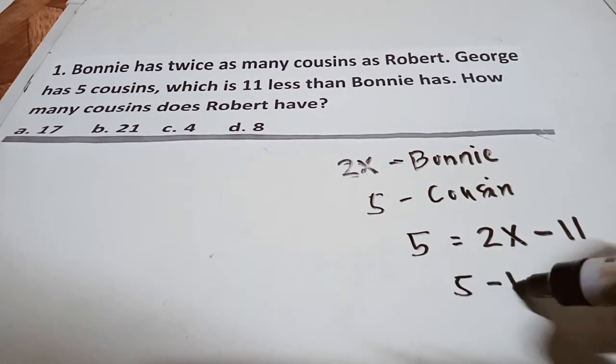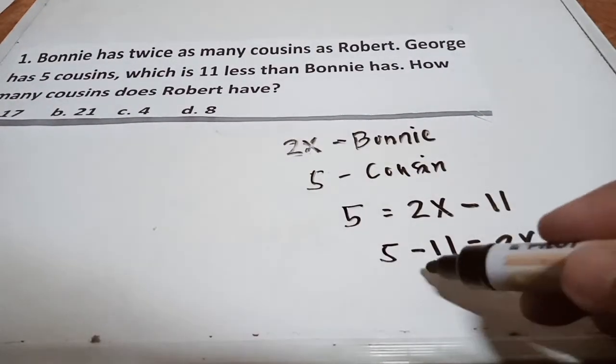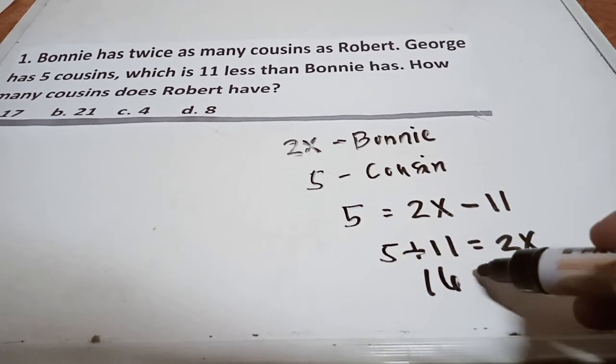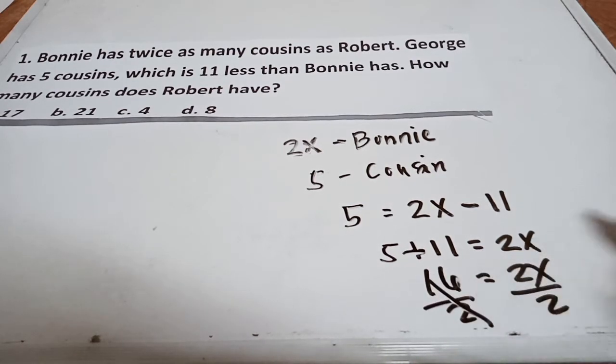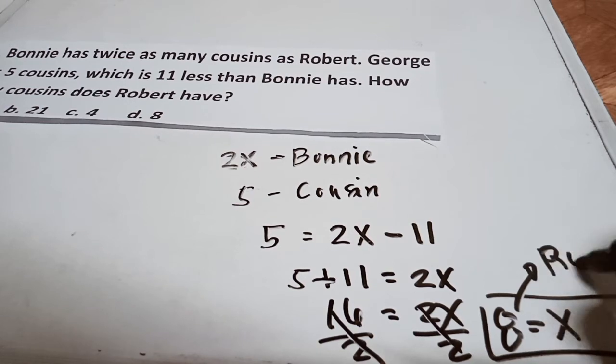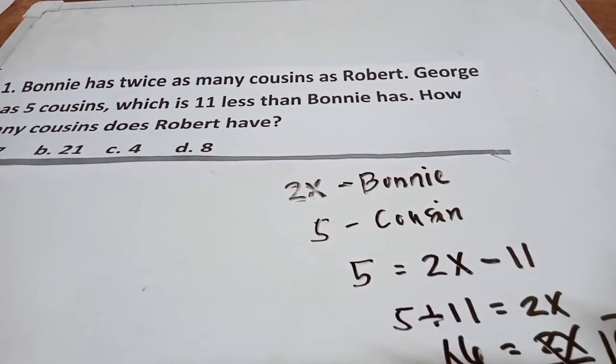Let's have 5 equals 2x minus 11. How many cousins does Robert have? 5 plus 11 equals 2x, so this will become 16 or positive. This will become positive 11 equals 2x, and then divided by 2. x equals 8. The total number of cousins Robert have will be 8. The best answer is letter D.